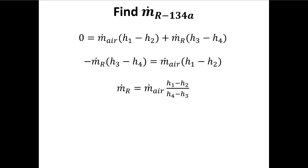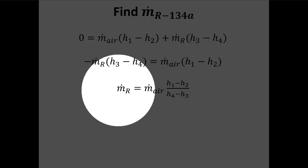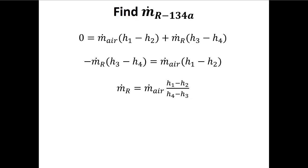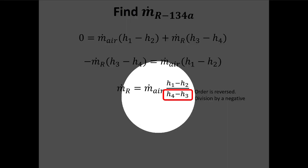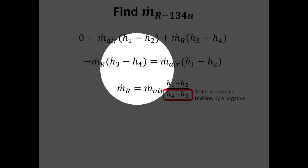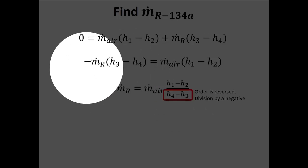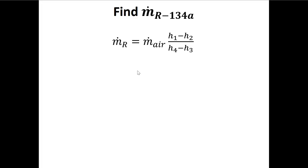Grouping by fluid type: mass flow rate of air times (H1 − H2) plus mass flow rate of refrigerant times (H3 − H4) equals zero. Rearranging, the mass flow rate of refrigerant equals the mass flow rate of air times (H1 − H2) divided by (H4 − H3). This type of analysis — getting the mass flow rate of one fluid as a function of the other — is what you get when doing conservation of energy on the entire heat exchanger.